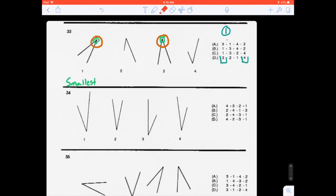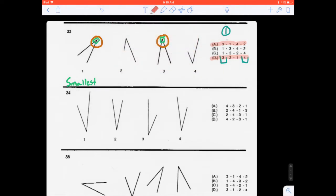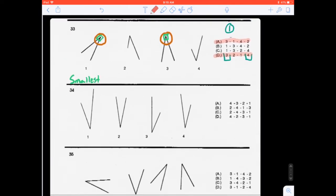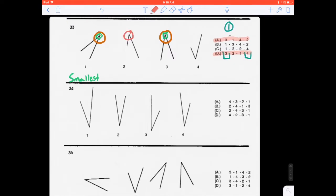So right off the bat, we know that the answer cannot be A, and it cannot be D. Just right off the bat. Now, we need to focus on the largest angle. So once we figure out what the largest angle is, we've got our answer. So let's pick a different color here. Again, we're going to be focusing on this portion of the angle.